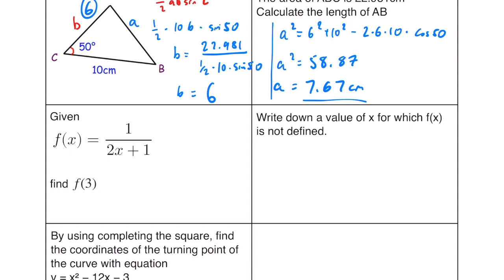Onto functions, so if f of x is 1 over 2x plus 1, f of 3 is going to be 1 over 2 lots of 3 plus 1, which is equal to 1 over 7.